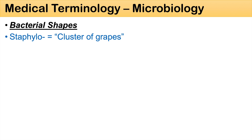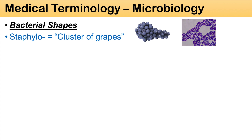Moving on to how we describe bacterial shapes — a lot of bacteria are described by how they look and how they are shaped. The first one you often hear of is staph, or staphylo, or staphylococcus. The prefix staph or staphylo means a cluster of grapes. When we look at staphylococcus aureus, there is a similarity, and this is why staphylococcus is named the way it is — it appears like a cluster of grapes under a microscope.